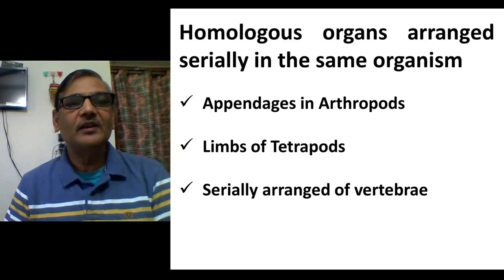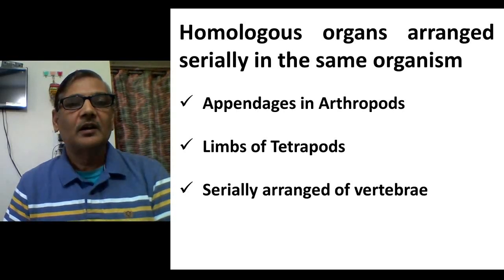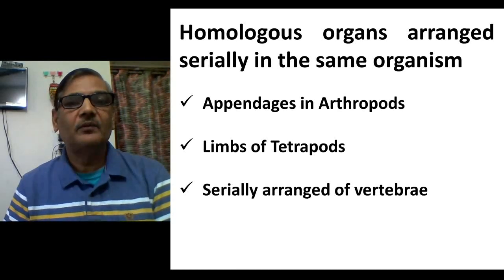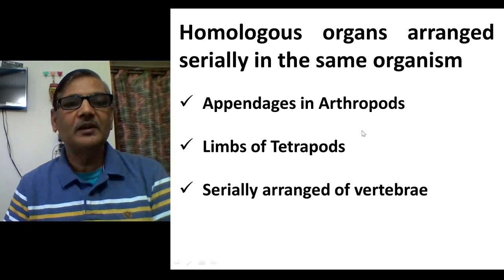There is a scientific term called serial homology. Homologous organs which are arranged serially in the same organism show serial homology. It means in a single organism, if certain structures are arranged serially, they perform different functions but their embryonic origin pattern is the same — such structures are serially homologous organs.